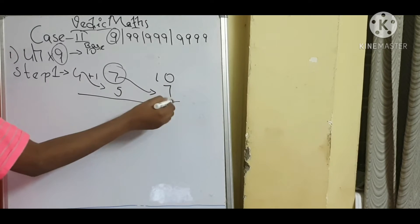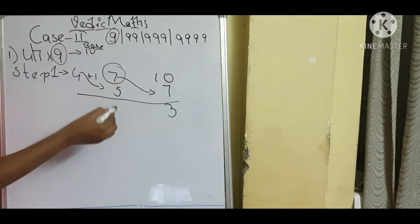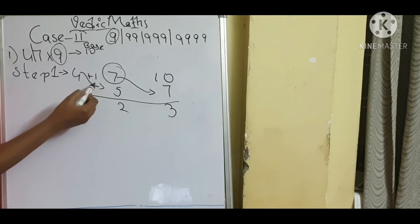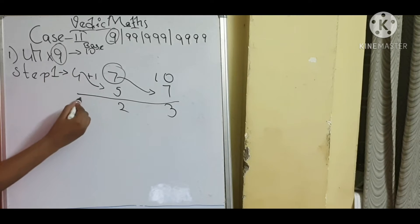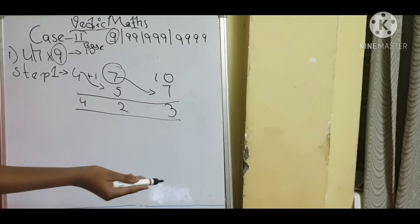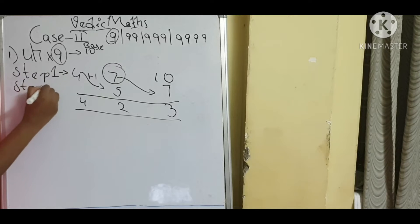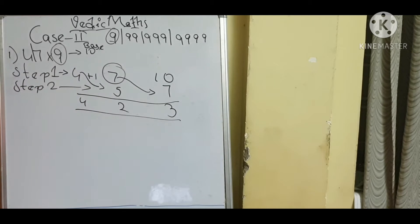Next: 10 minus 7 is 3. Next: 7 minus 5 is 2. Here we should not add 1 — directly write 4. My answer will be 423. These are the two steps: Step 1 and Step 2. Now I will go with another example.